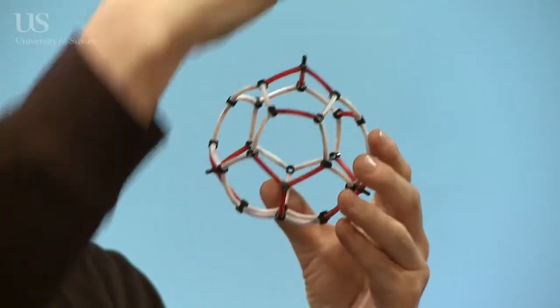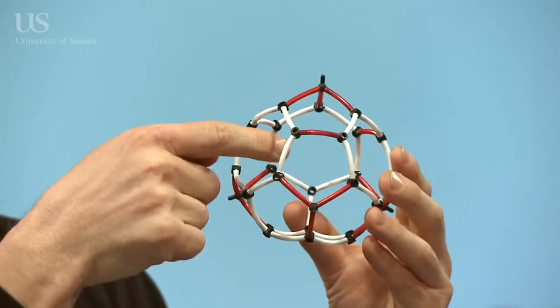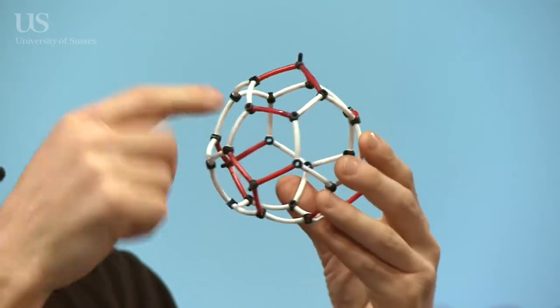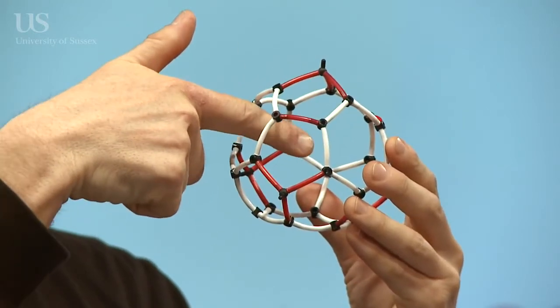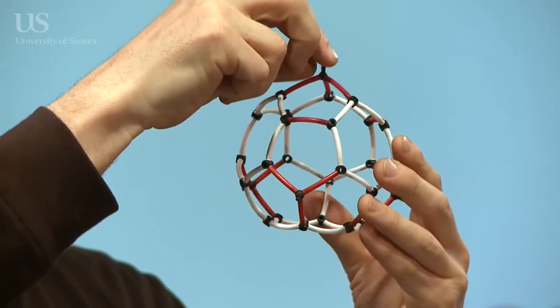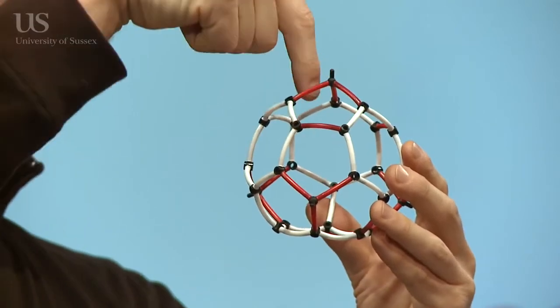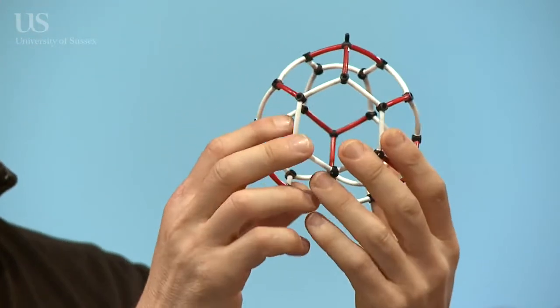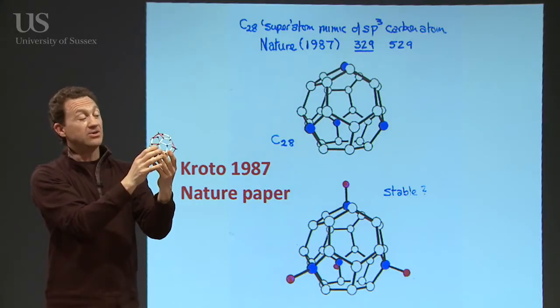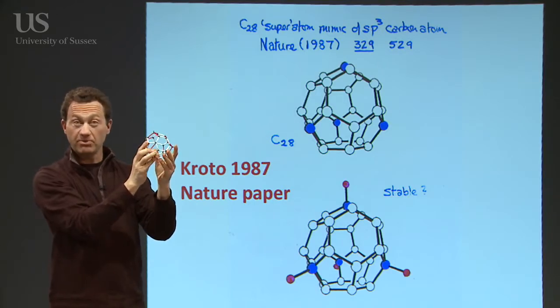You can add atoms on the outside, but also people have done experiments with uranium, which has got a valency of four. Actually, it looks like you can trap a uranium atom inside. Instead of having atoms on the outside of the cage, you can take these bonds and bring them in to the uranium and stabilize it that way. Uranium C28 seems to be particularly stable.